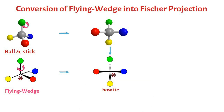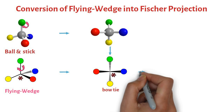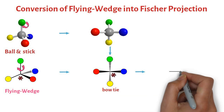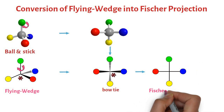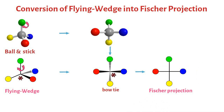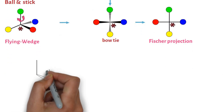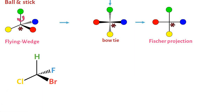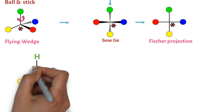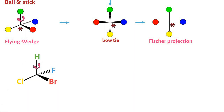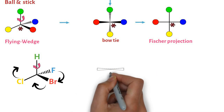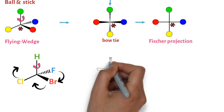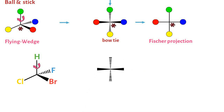Now in order to write the Fischer projection, we make a cross and put the spheres as they are in the bowtie projection. Consider this flying wedge projection. To convert into Fischer projection, we will rotate this by holding the top green hydrogen, so that bromine and fluorine come out of the plane, and hydrogen and chlorine go into the plane.